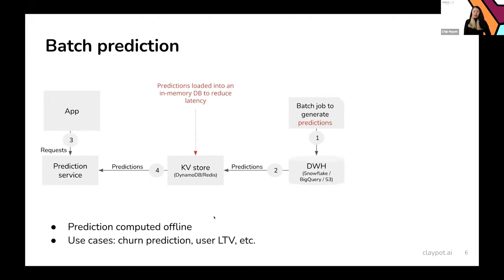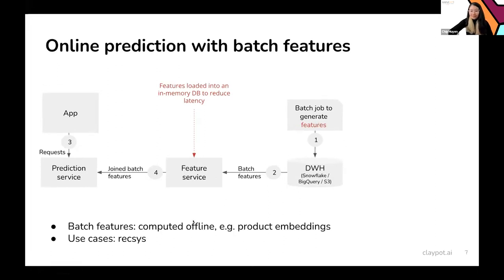Not all use cases need online predictions. Batch prediction works well for tasks like churn prediction or lifetime value — if you want to predict which users will leave a platform, you can probably run that once a month or once a week and that's fine.